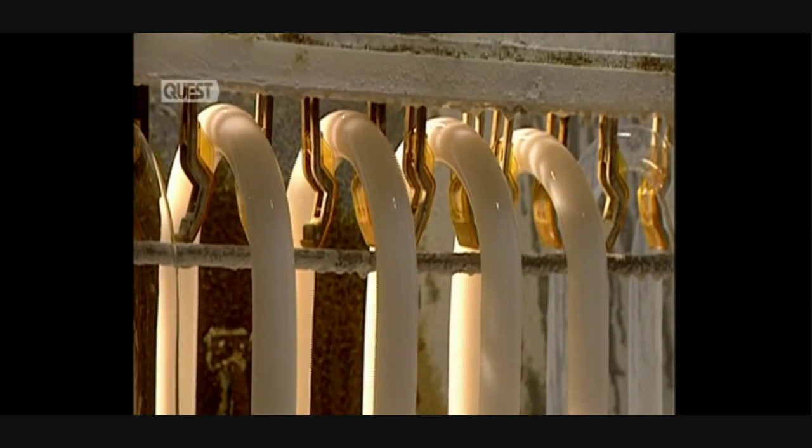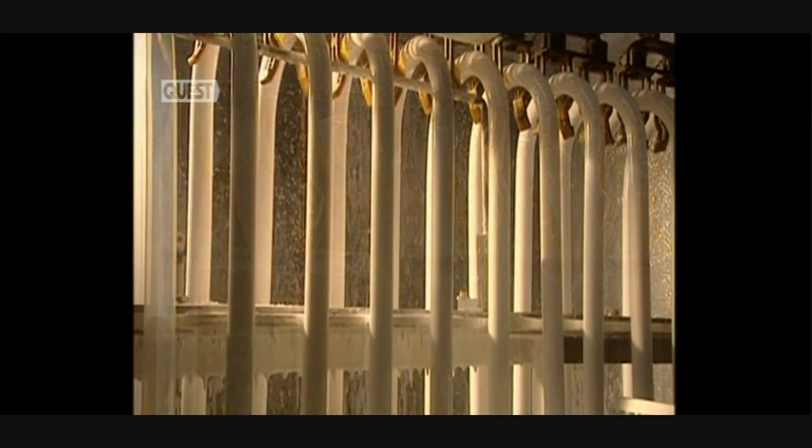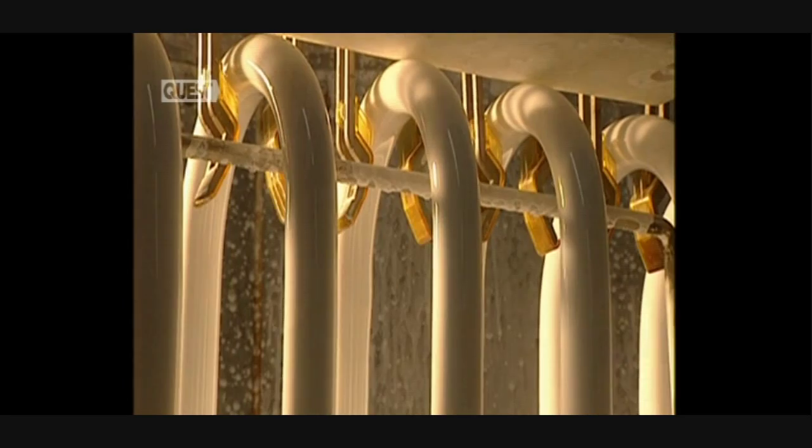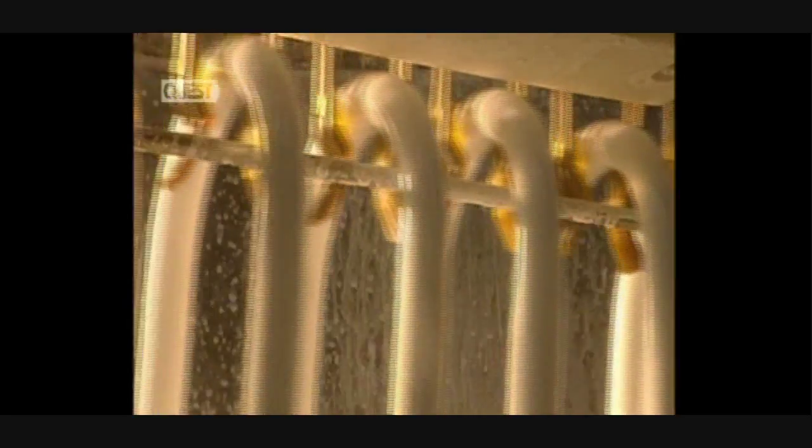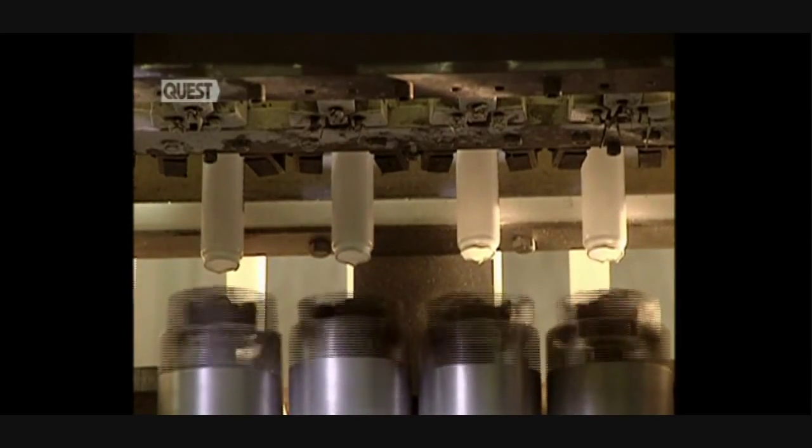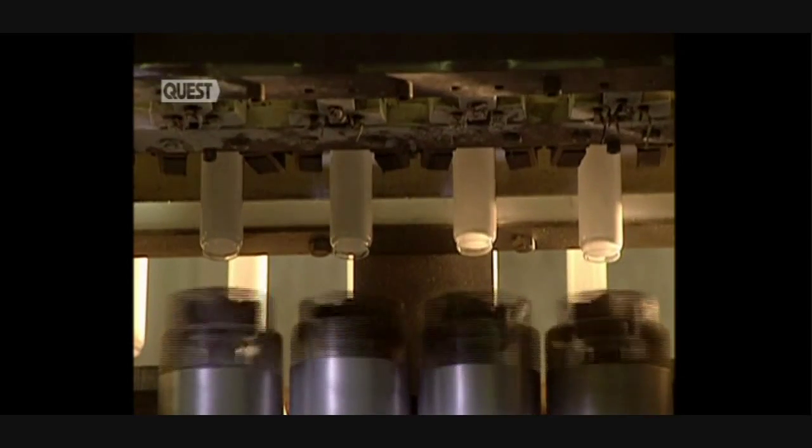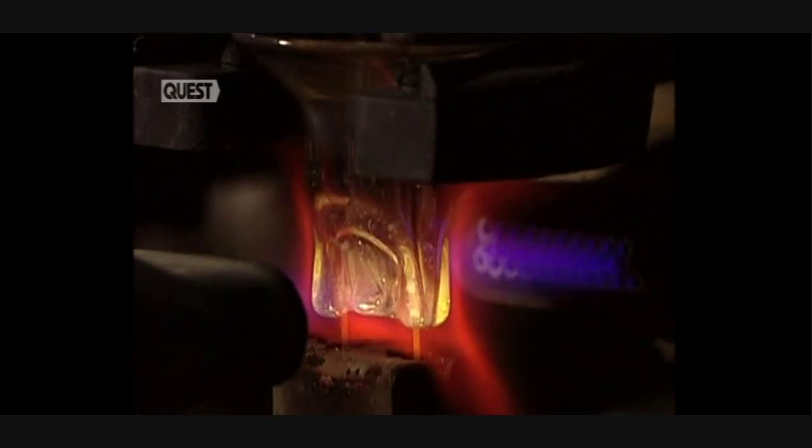The bent tubes go into the coating chamber where a thin coat of phosphorus is applied to the inner surfaces. It's phosphorus which produces light by transforming ultraviolet generated by the ionization of mercury. Then the surplus phosphorus is removed from the ends of the tube so that they can be sealed later.